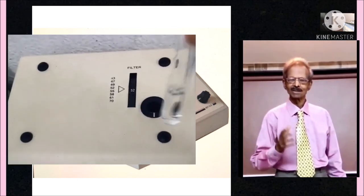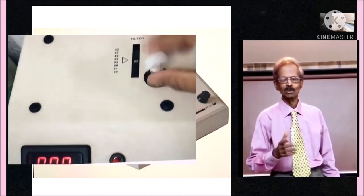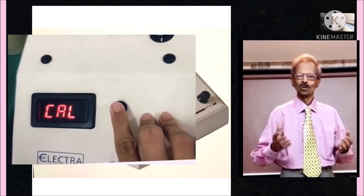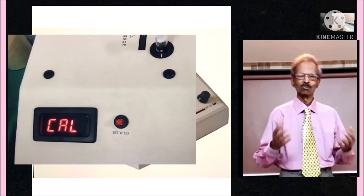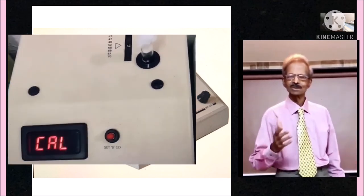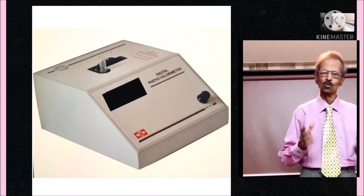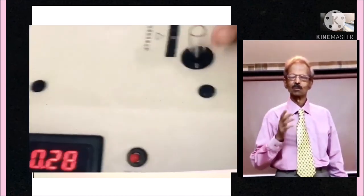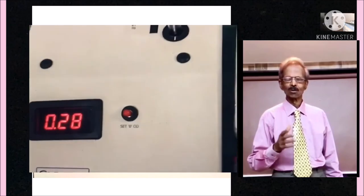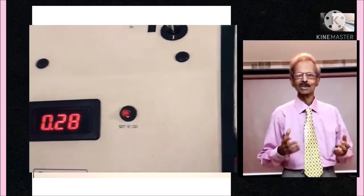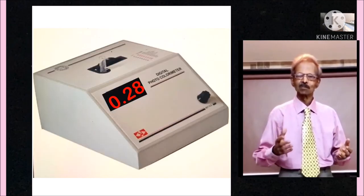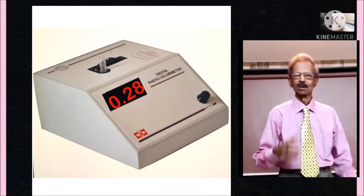5. Transfer blank solution in a cuvette and place in the cuvette slot. Then by rotating this knob, adjust reading to 0 optical density. 6. Now transfer standard solution to a cuvette and read directly on photometer. This will indicate optical density of standard.